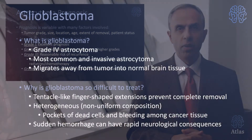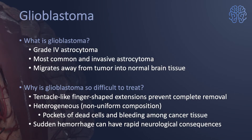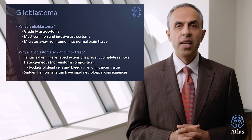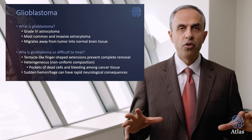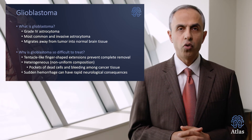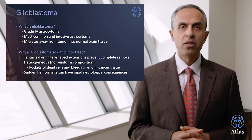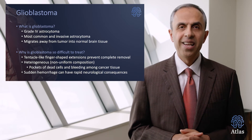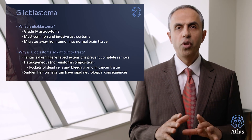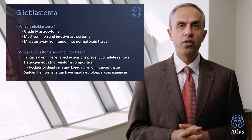What about glioblastoma? This is what we truly call brain cancer. Glioblastomas are grade 4 astrocytomas — the most common and most invasive astrocytoma. They can migrate far into normal brain tissue, really precluding gross total resection. Why is glioblastoma so difficult to treat? It is because of these tentacle-like, finger-like projections into the normal brain that prevent complete removal of these tumors.